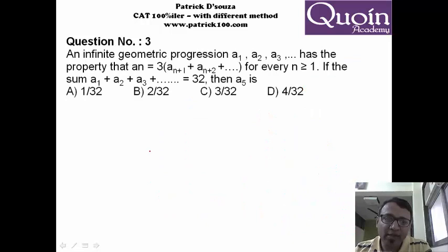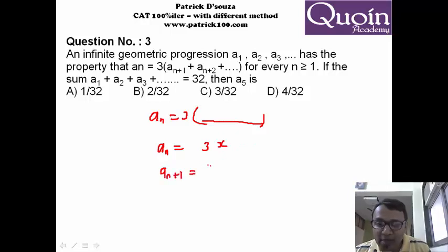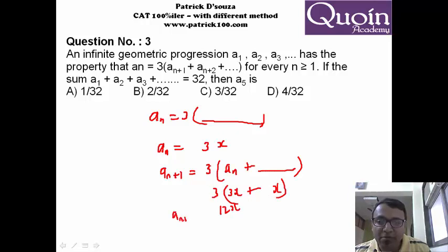An is equal to thrice the sum of all the remaining numbers. Let me say the sum of all the remaining numbers is x. That means an will become 3x. Next, an+1 is 3 into sum of all the remaining numbers, which is an plus the remaining numbers. We know an is 3x, plus remaining numbers is x, so that means this becomes 12x. If you keep on doing it, we realize that number is 3x, then previous number is 12x, then previous number becomes 48x. So the ratio is 1 by 4.